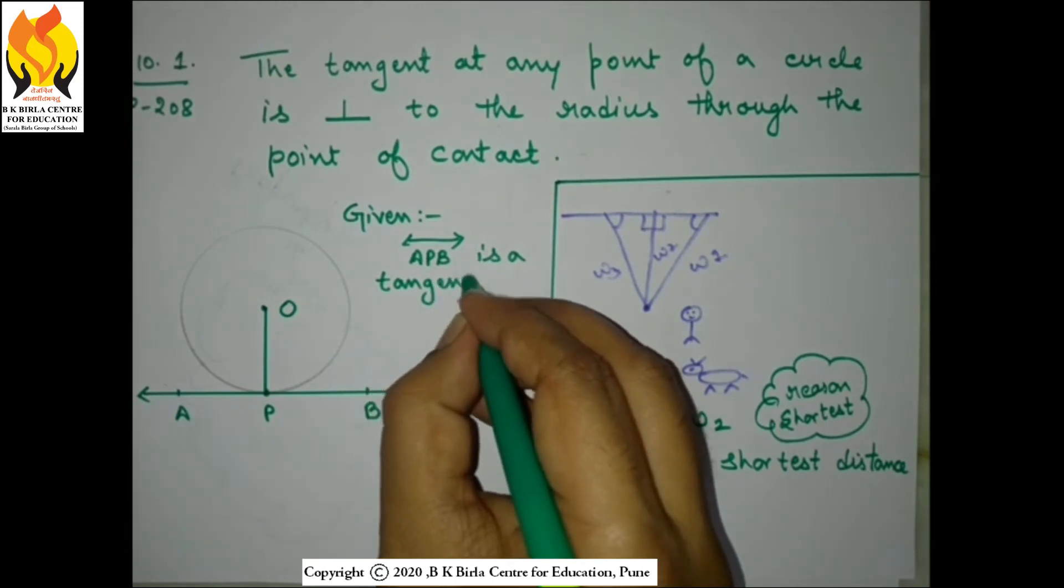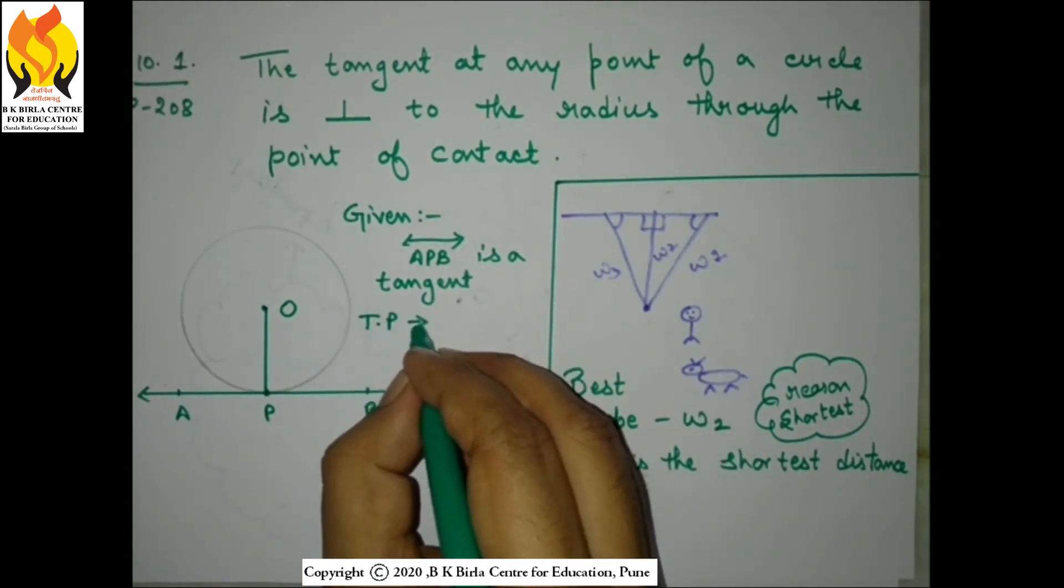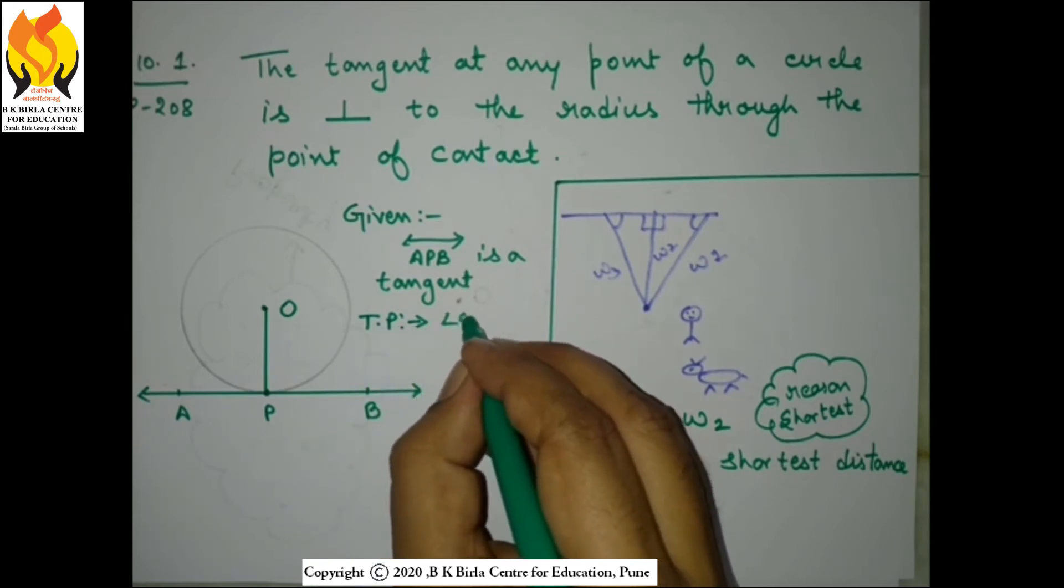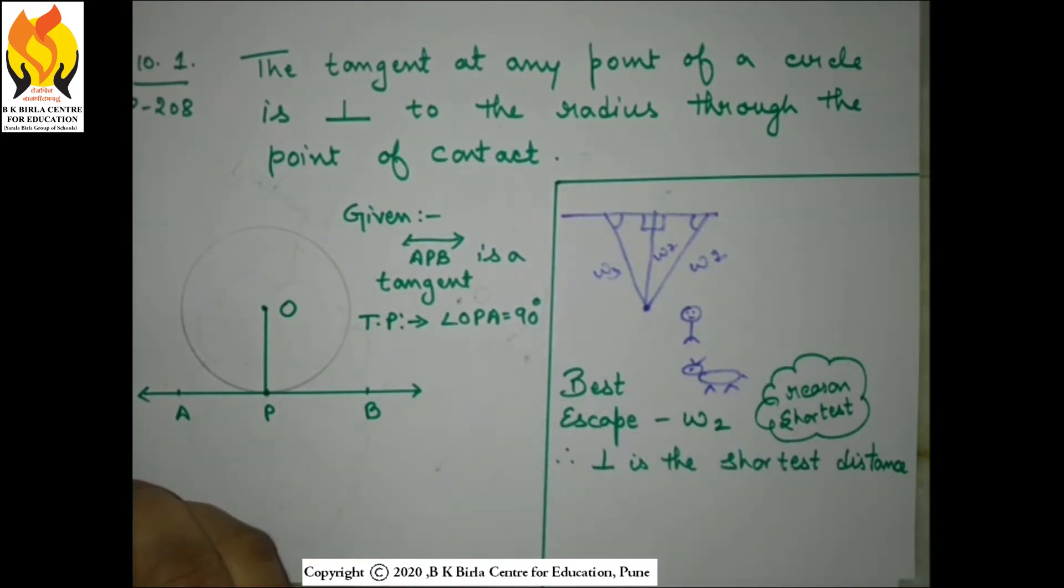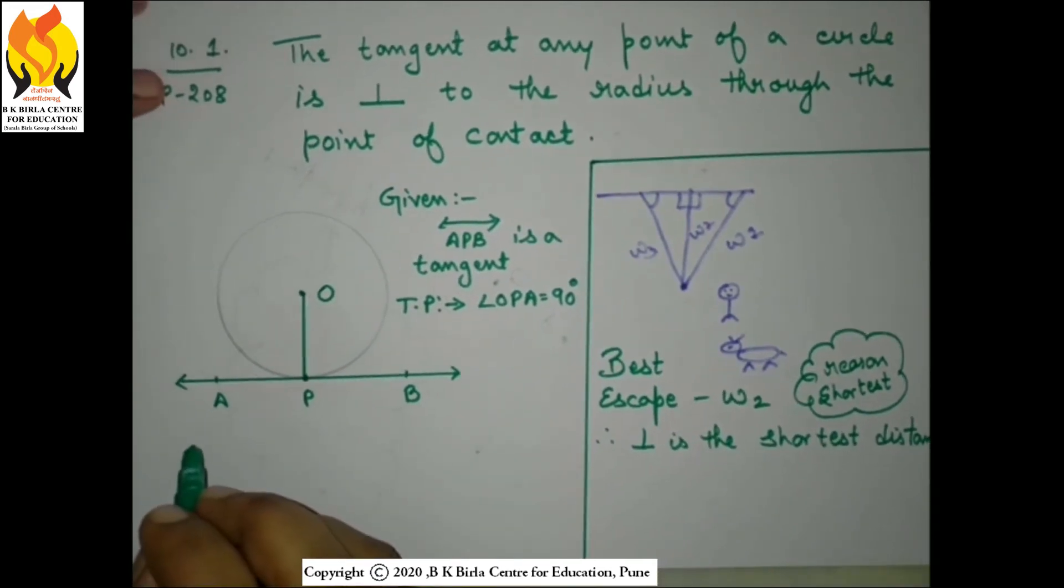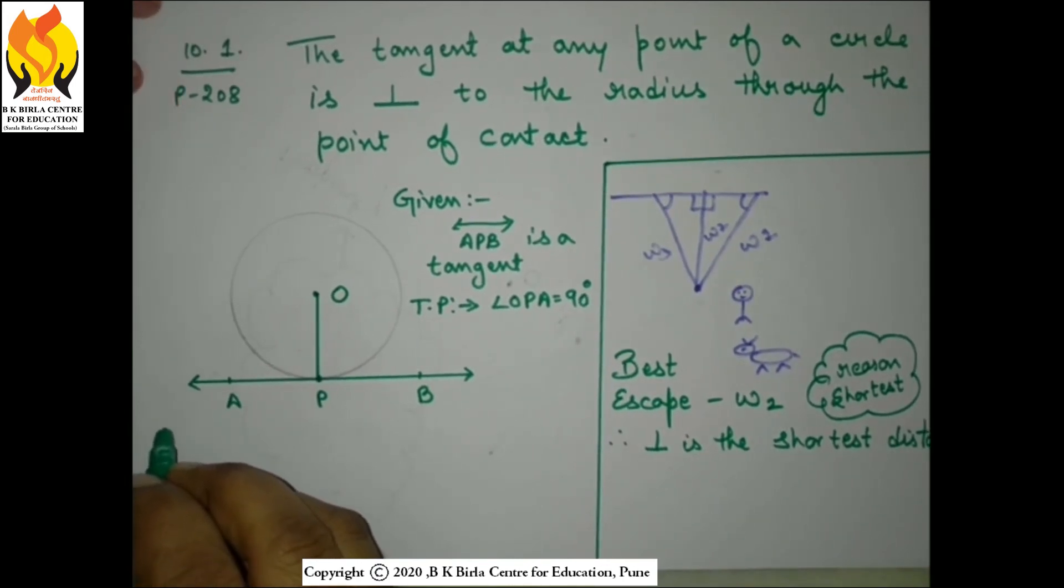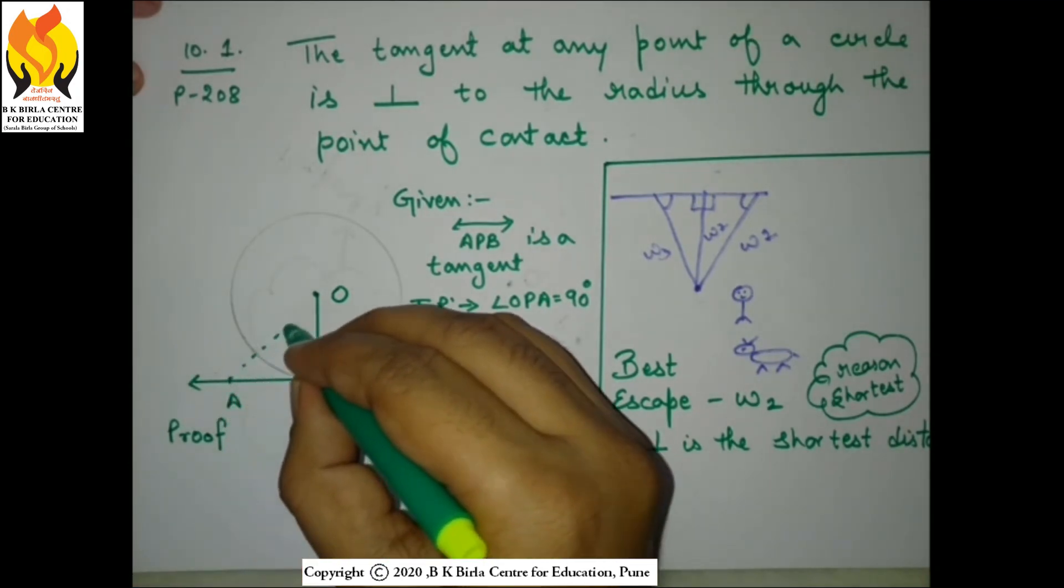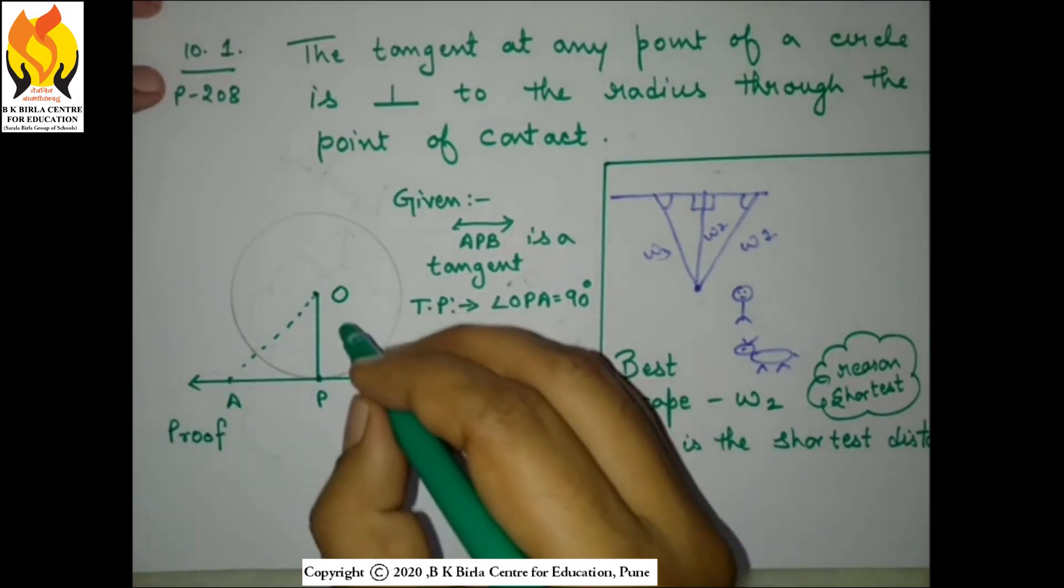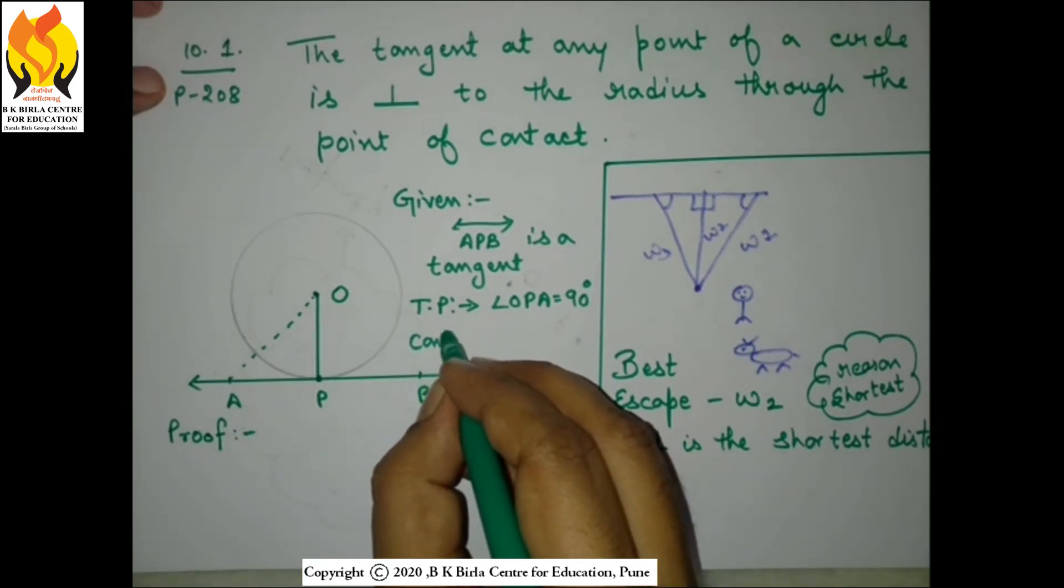Now we are given that APB line is a tangent, and we need to prove that the angle OPA is 90 degrees, that is OP is perpendicular to AB. So before starting the proof, let us do a small construction: join O and A. Now my task is to prove that OA is greater than OP.